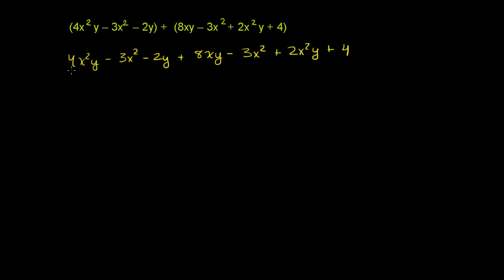So here I have 4x squared y. Do I have any other x squared y terms? This right here is another x squared y term. So I can add 4x squared y's plus 2 more x squared y's, and I will get 6x squared y.